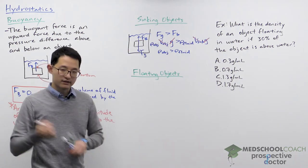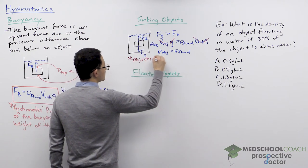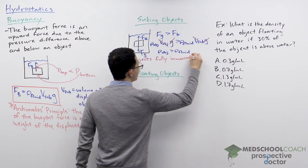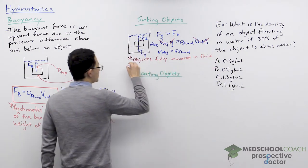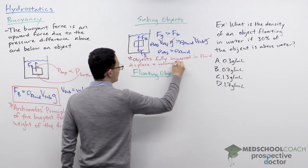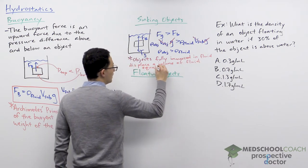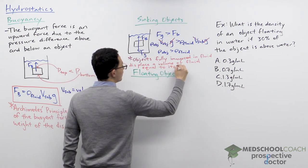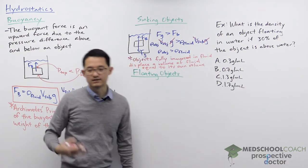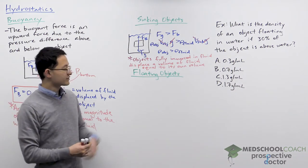An important note: objects fully immersed in a fluid displace a volume of fluid equal to their own volume — meaning the volume displaced equals the volume of the object. This applies to sinking objects.